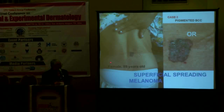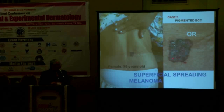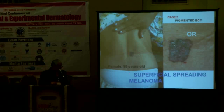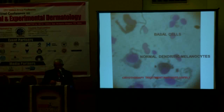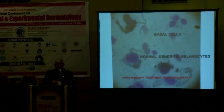Case number two: an elderly patient, 89 years old, presented with a pigmented lesion. The hypothesis was pigmented basal cell carcinoma or superficial spreading melanoma. I needed to diagnose quickly before the patient left. When I found many basal cells and normal dendritic melanocytes, I could confirm the diagnosis of basal cell carcinoma and not spreading melanoma. Cryotherapy treatment was safely performed.